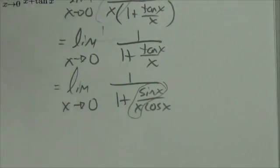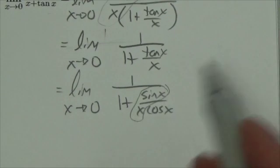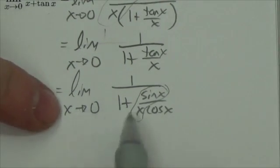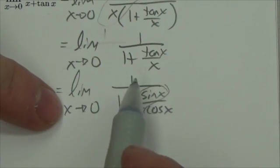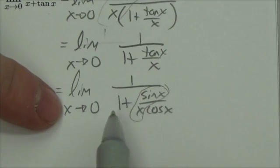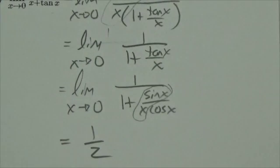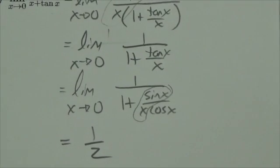Now that gets rid of the problems that I have letting x go to 0, because now if x goes to 0, cosine of x goes to 1. So this becomes 1 over 1 plus 1 over 1, which is just 1 over 2. And that's the answer, that's the limit of this question.